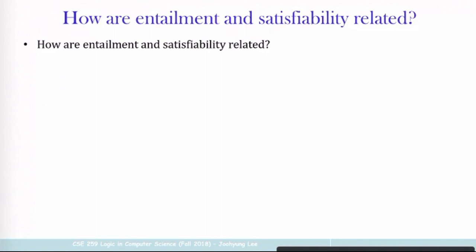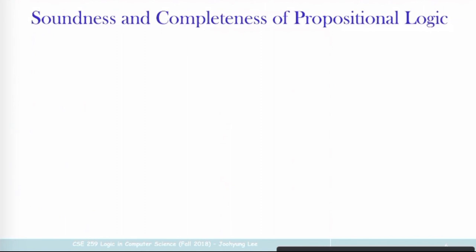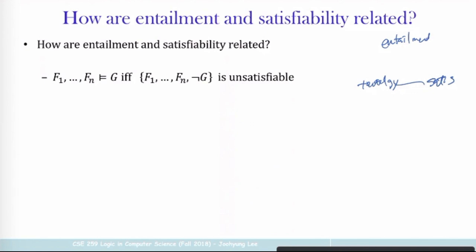The next one is entailment and satisfiability. You already learned two things, and from those you can compose the third. You learned how tautology and satisfiability are related, and how entailment and tautology are related. Now we are trying to talk about entailment and satisfiability, which can be composed from those two known relationships. What you get is: F1 through Fn entails G if and only if this set is unsatisfiable.